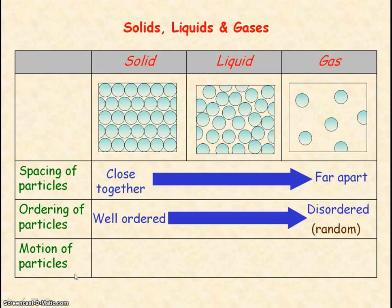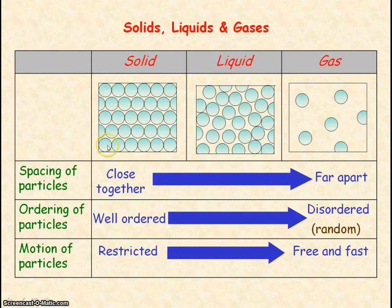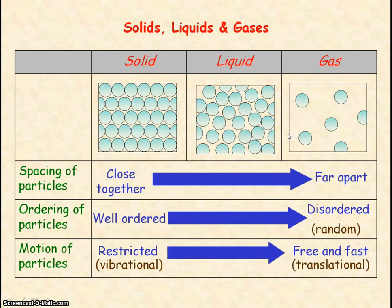If we now consider the motion of the particles, for a solid they have a restricted motion — that is they vibrate about a fixed point — they have no translational motion as they cannot move from one point to another. For a liquid, they still have vibrational motion but there is some translational motion; they can slide past each other. Whereas for a gas, there is no vibrational motion, just translational motion, moving from one place to another, and the motion is free, fast and random.